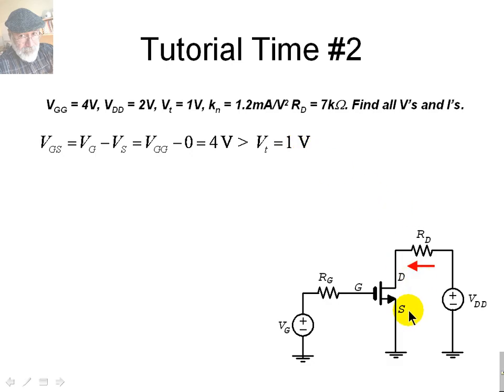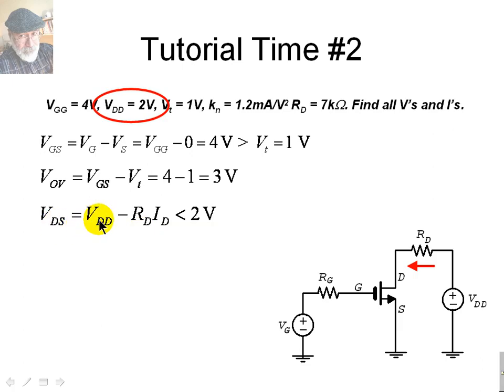But observe one thing. This source here is a 2 volt source. This voltage VDS is going to be VDD minus the drop in RD. So whatever value VDS is, that voltage VDS is going to be less than VDD, is going to be less than 2 volts. Why do we care about that? Because this voltage needs to be compared to the overdrive voltage of the transistor, which is how much higher VGS is than the VT. VGS is 4 volts. VT is 1 volt, so the overdrive voltage is 3. And we found that VDS is going to be by force less than 2. That means that this is true. VDS is below the overdrive voltage. The transistor is in triode mode.